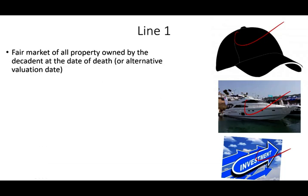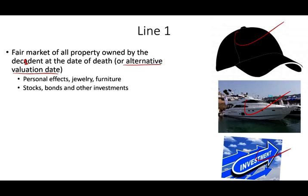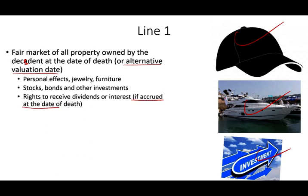We look at the fair market value of all property owned by the decedent at the date of death or an alternative valuation date — I'll discuss that later. That includes personal effects, jewelry, furniture, stocks, bonds, investments, and the right to receive dividends or interest if they accrued at the date of death. As long as interest accrued at the date of death, the estate is entitled to it. For dividends, there is no accrual — as long as they are declared, the estate is entitled.